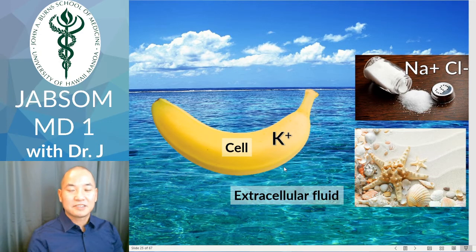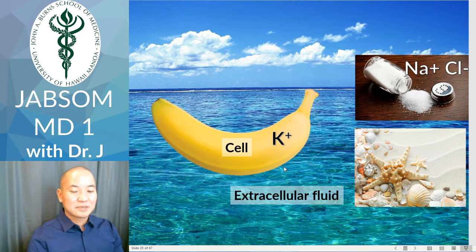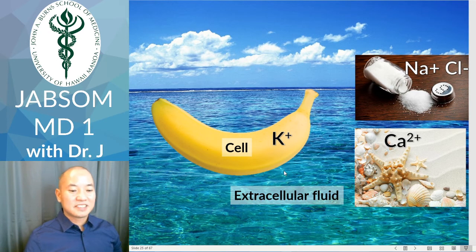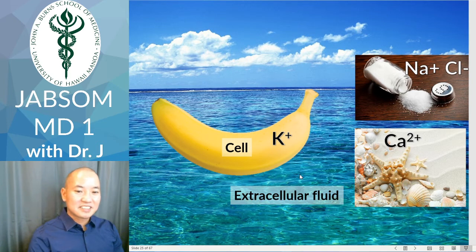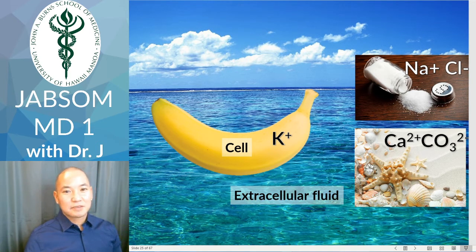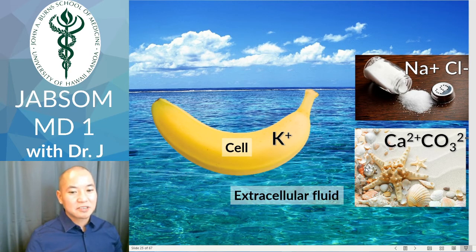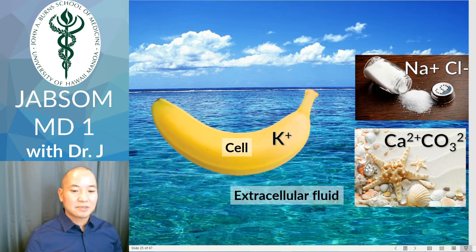The ocean also has a lot of seashells. What mineral is found in abundance in seashells? Calcium. So calcium is in higher concentrations in the extracellular fluid than inside the cell. And seashells contain calcium carbonate — which is slightly different from bicarbonate, but that's how I remember it: there's more bicarbonate in the extracellular fluid than in the cell at rest.